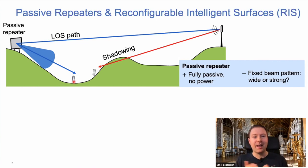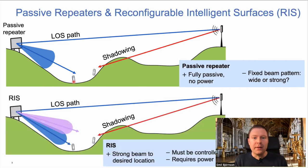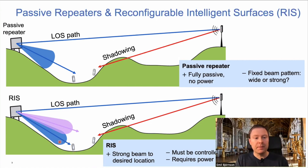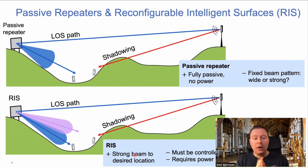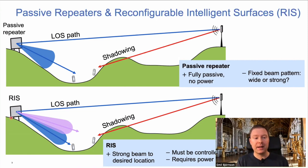This is old-school technology — fully passive, requiring no power supply, just like an advertisement billboard. The downside is that you need to use the surface to cover the entire valley. A larger surface captures more energy but must spread it over the whole region. A reconfigurable intelligent surface improves on this: it can serve two users with separate beams, directing a narrower beam toward each user in turn, providing stronger, targeted signals — more like beamforming. The downside is that it requires control and power consumption.